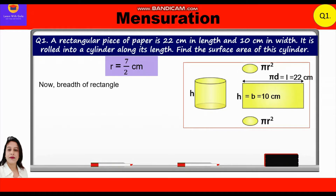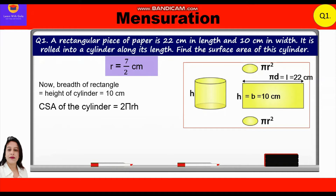The breadth of the rectangle equals the height of the cylinder, which is 10 centimeters. The curved surface area of the cylinder is 2πrh. Substituting: 2 × (22/7) × (7/2) × 10 = 220 centimeters square.